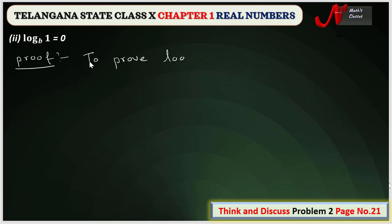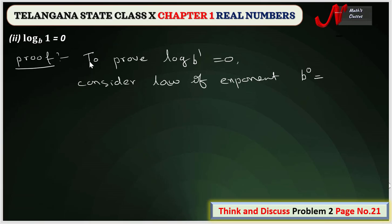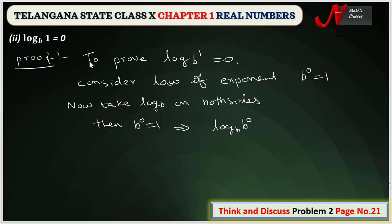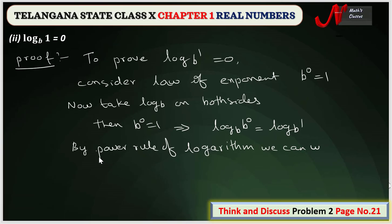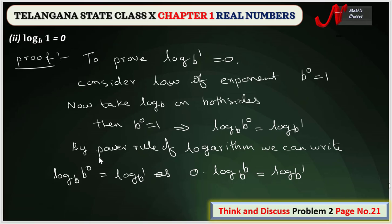Now we prove log one base b equals zero. Consider the law of exponents: b power zero equals one. Taking log with base b on both sides: log b power zero base b equals log one base b. By the power rule of logarithm, this becomes zero into log b base b equals log one base b, so zero equals log one base b. Hence proved.